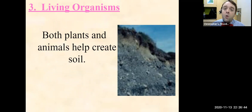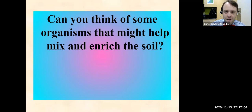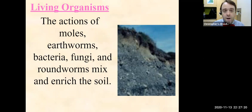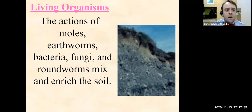Living things. There's organic matter in soil, and both plants and animals help create it. As those organisms die, that organic matter incorporates with weathered parent material and becomes part of the soil — they're decomposed and broken down. Organisms that enrich soil include moles and burrowing creatures, earthworms, saprophytic organisms like bacteria and fungi which help break down organic material, roundworms, and very ancient organisms. All those organisms help break down and enrich the soil.